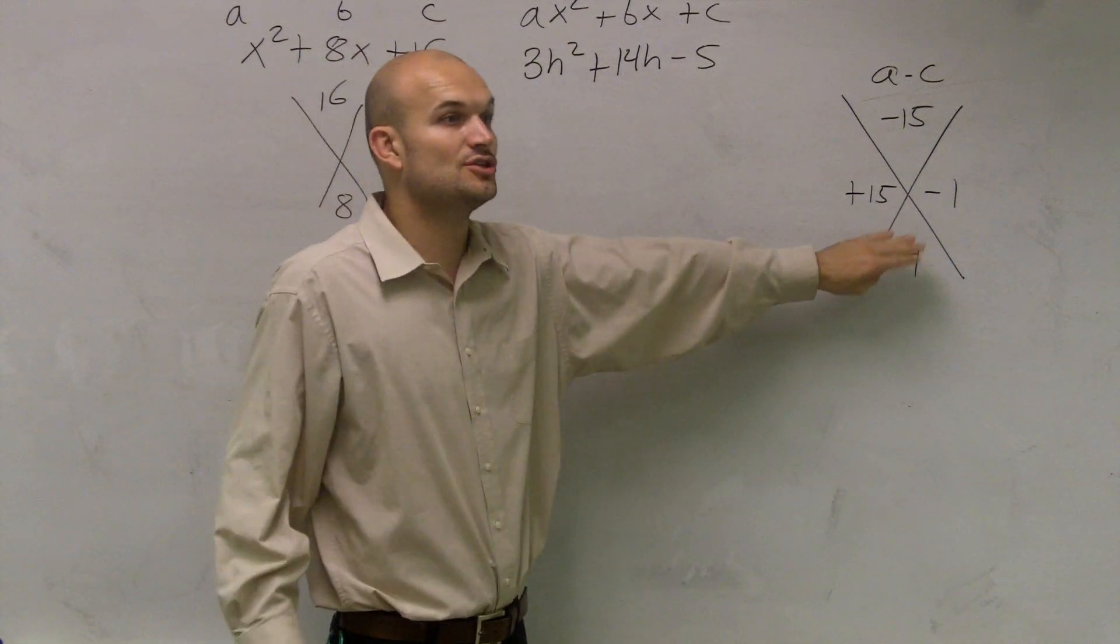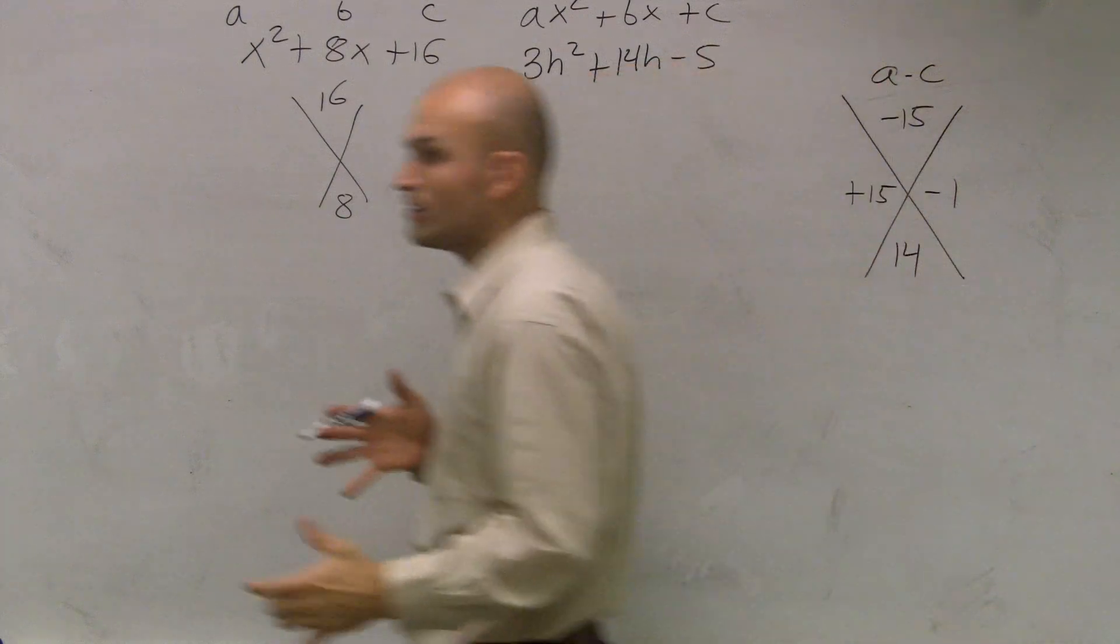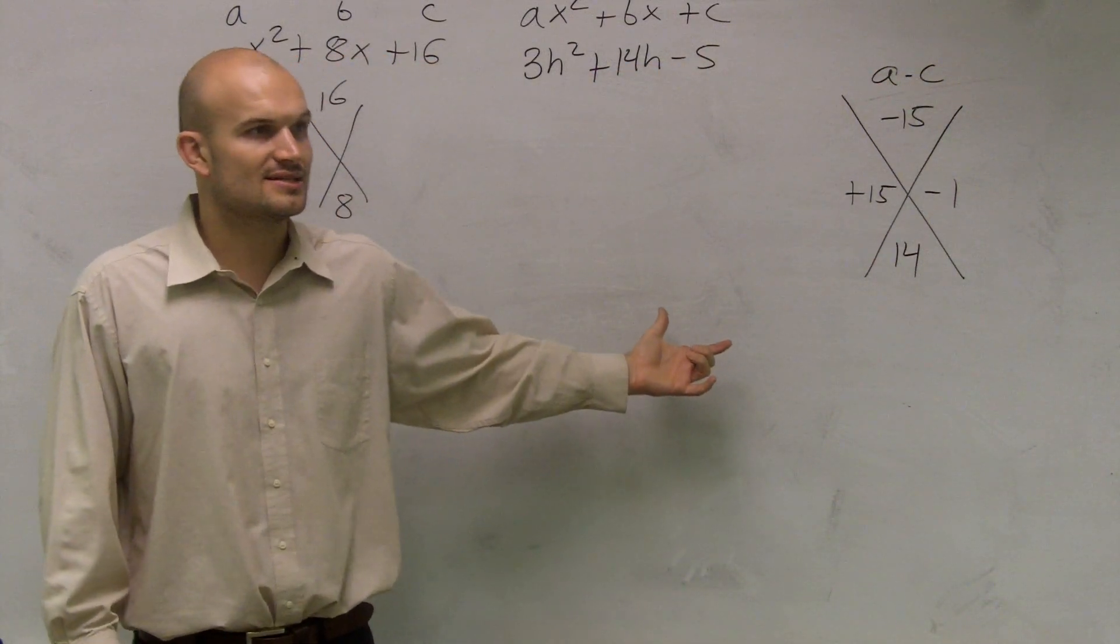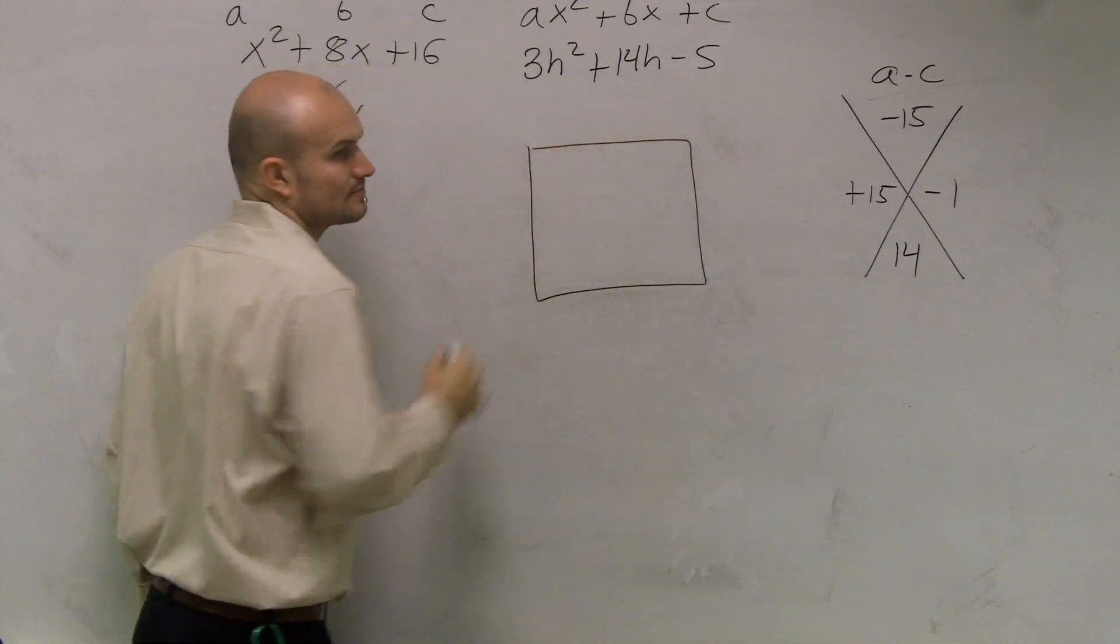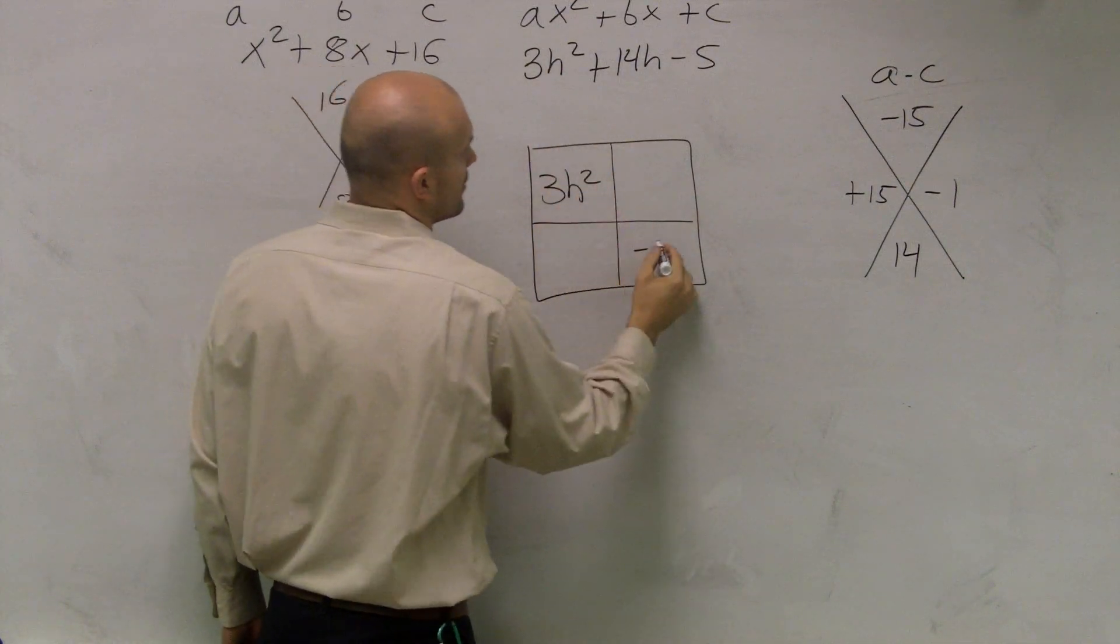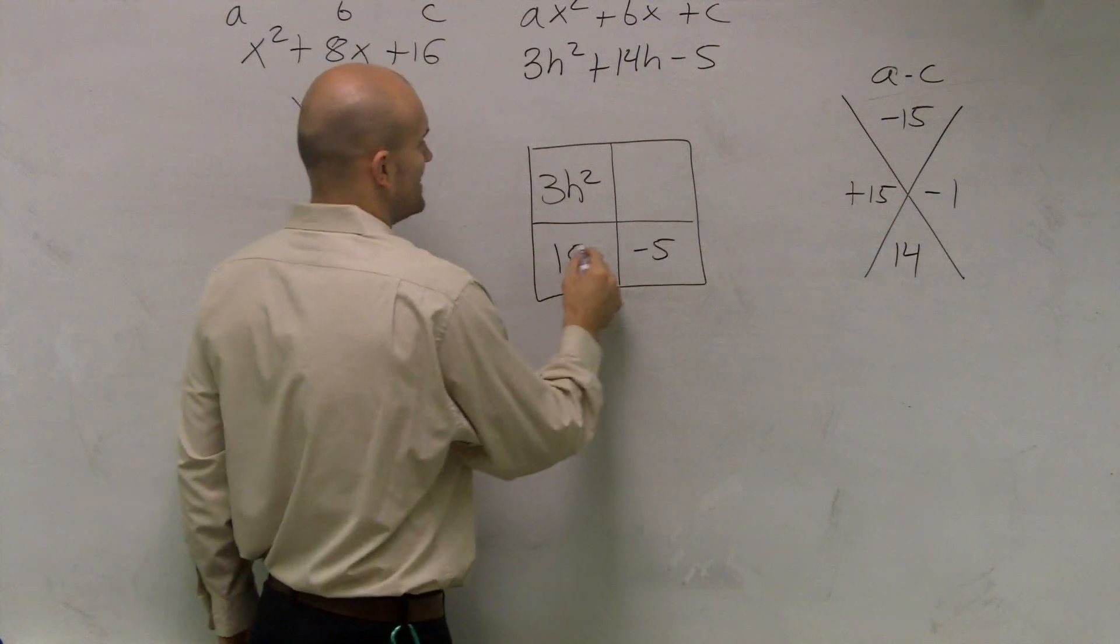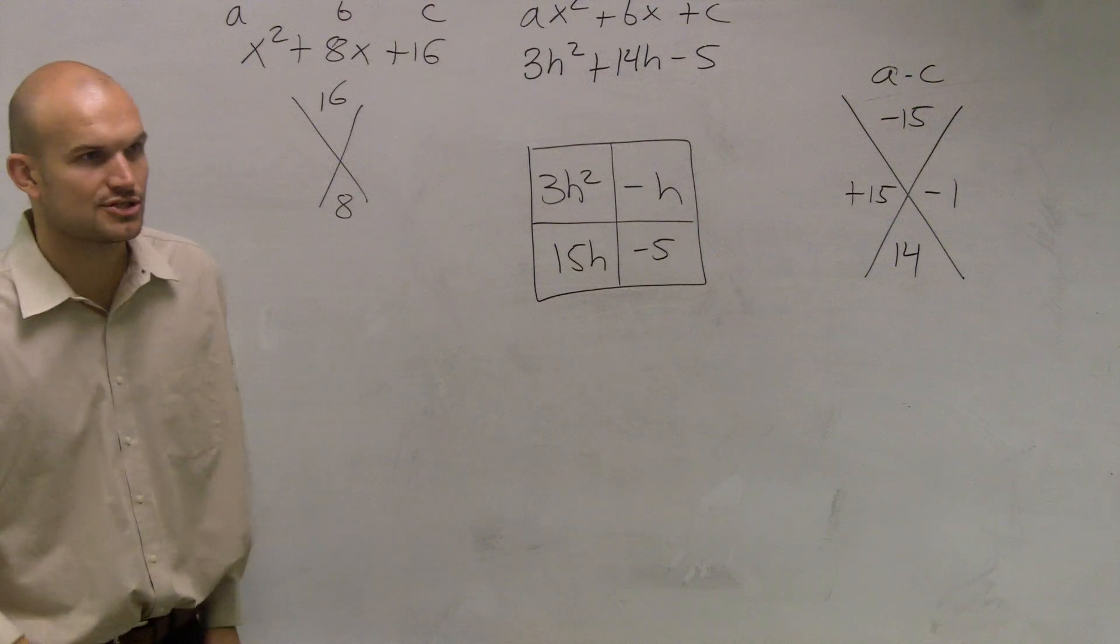So now I have these two points. So ladies and gentlemen, we can work on the grouping part, or we can work on the area. I'm just going to do the area one again so you guys can see it. So I create a box, and I throw in the areas that we know. We know 3h squared. We know negative 5. And now I'm going to include 15h and negative 1h, which is a negative h.